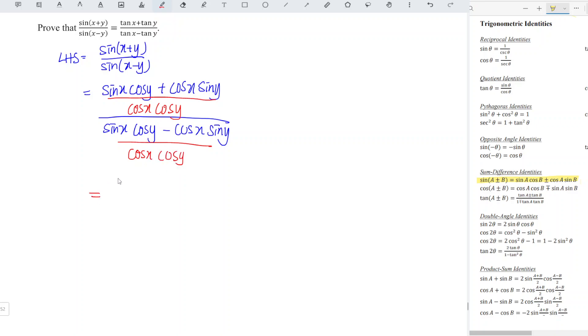So we have sine x cos y divided by cos x cos y, plus cos x sine y divided by cos x cos y, the whole thing over sine x cos y divided by cos x cos y, minus cos x sine y divided by cos x cos y. Now it's time for